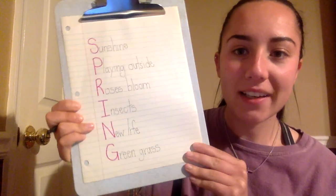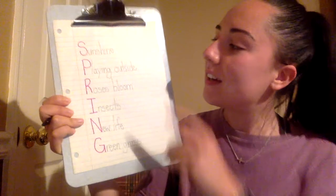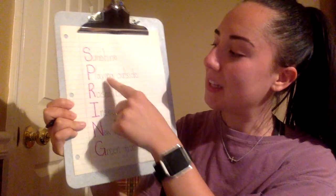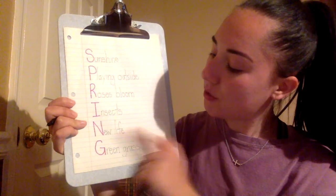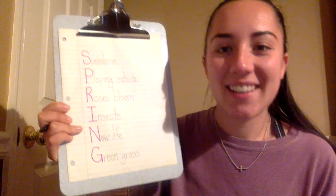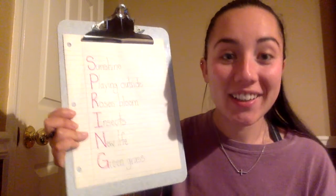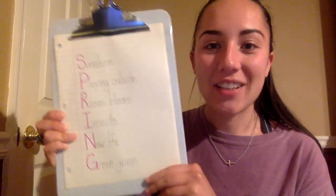And now I have finished my spring acrostic poem. Let's read it: Sunshine. Playing outside. Roses bloom. Insects. New life. Green grass. That is spring! All right, I cannot wait to see what you make in your poem. Have an awesome day. Bye!